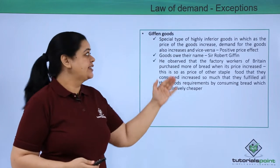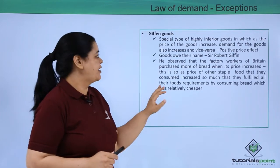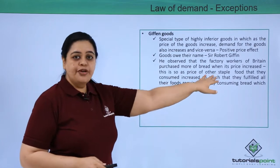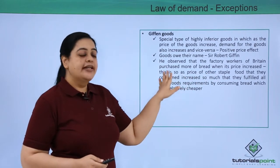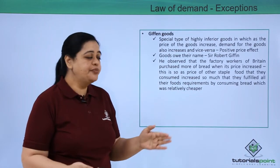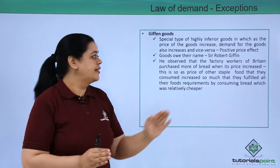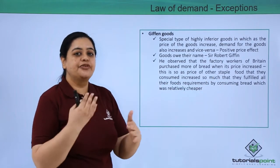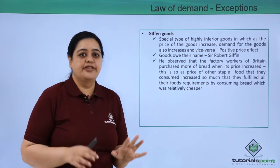These goods are named after Sir Robert Giffen because he was the person who observed this particular behavior and came out with this exception to the law of demand. He observed that the factory workers of Britain purchased more bread when the price increased, because the price of other staple foods which the consumers used to consume also increased.